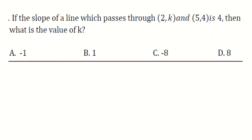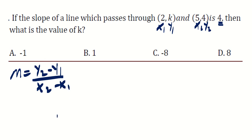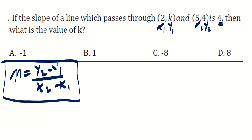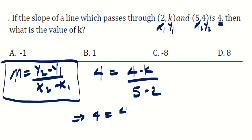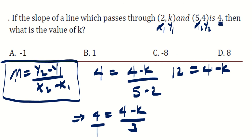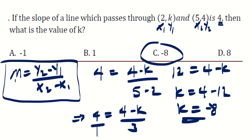The next question: if the slope of a line passing through (2, k) and (5, 4) is 4, find k. Using the slope formula: slope equals (y2 minus y1) over (x2 minus x1), so 4 equals (4 minus k) over (5 minus 2), giving 4 equals (4 minus k) over 3. Cross-multiplying: 12 equals 4 minus k, so k equals 4 minus 12, which is negative 8. The answer is C.